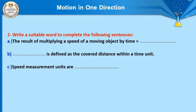Question number two: write suitable words to complete the sentences. 'The result of multiplying speed of a moving object by time' — the answer is distance, because speed × time = distance. 'Speed is defined as the covered distance within unit time.' Speed measurement units include meter per second and kilometer per hour, but also meter per minute and kilometer per second. The most commonly used are meter per second and kilometer per hour.